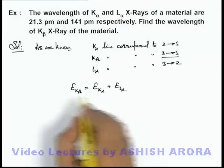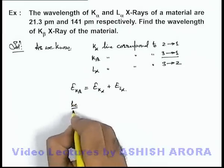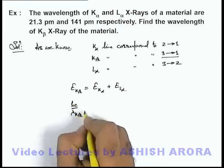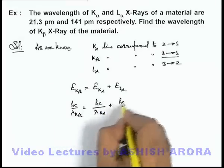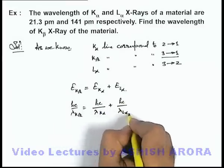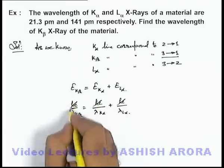So here if we substitute the photon energies, this will be hc by lambda K-beta is equal to hc by lambda K-alpha plus hc by lambda L-alpha. Here hc gets cancelled out.